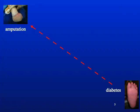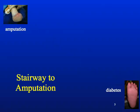So how do you go from the diagnosis of diabetes to amputation? It's not a single step or a foregone conclusion that once you have the diagnosis of diabetes, you'll end in amputation. There are several steps in between these two events that may be targets for intervention. We call this the stairway to amputation, or steps to amputation.